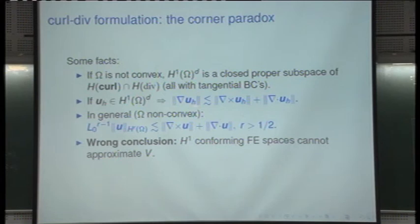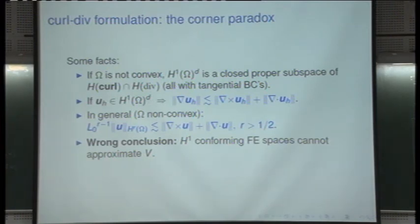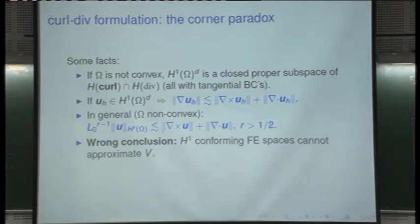If the exact solution u belongs to H_curl intersect H_div but not in H1 — which happens when the domain has corners or singularities — then the finite element solution (in H1) will converge to something in H1, never reaching the true solution. This is the corner paradox. On non-convex domains, the solution belongs to H^r with r greater than one half but less than one, so standard H1-conforming continuous finite elements cannot converge to the correct solution.